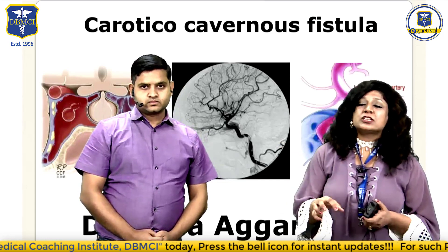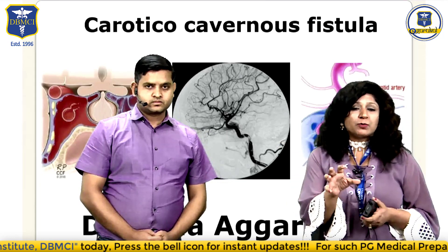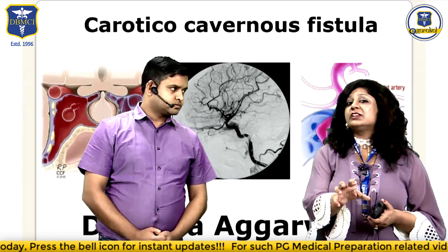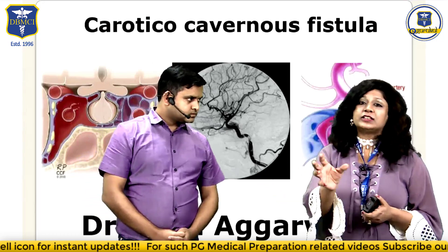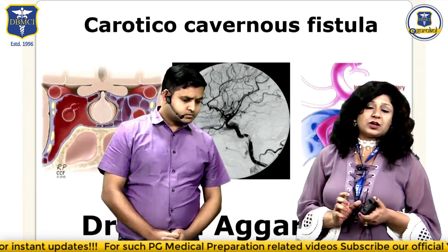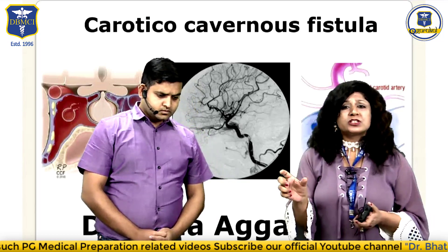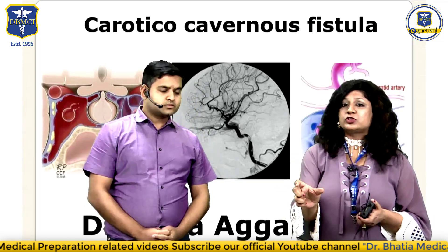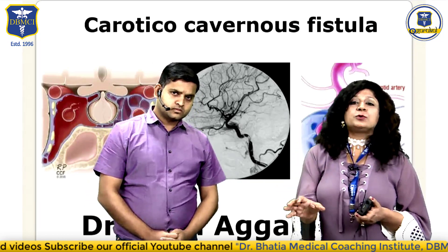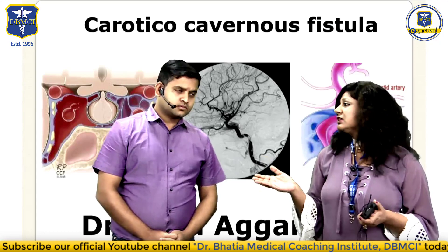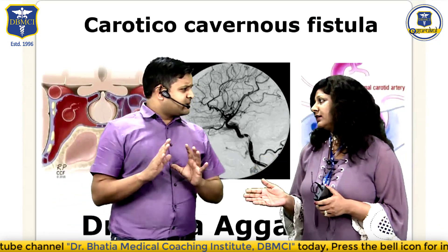Why pulsatile proptosis? Sometimes books will say exophthalmos, but I want to reserve the term exophthalmos for thyroid ophthalmopathy. So pulsatile proptosis is the key word. Whenever you get a question on pulsatile proptosis, the first thing you should think about is carotico-cavernous fistula.